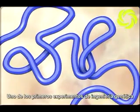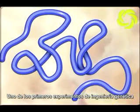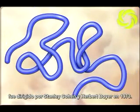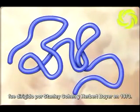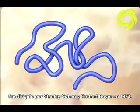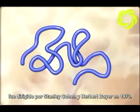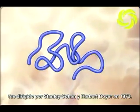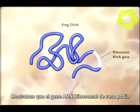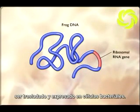One of the first genetic engineering experiments was conducted by Stanley Cohen and Herbert Boyer in 1973. They showed that the gene for frog ribosomal RNA could be transferred and expressed in bacterial cells.